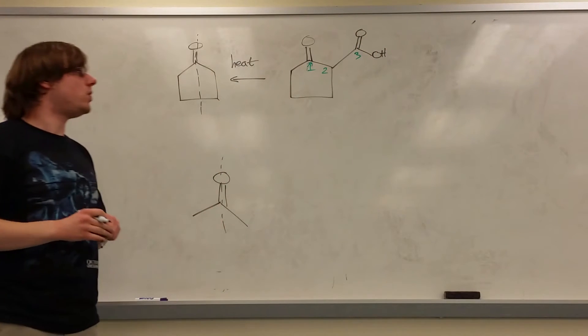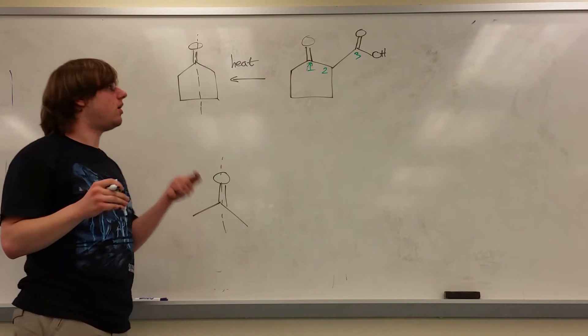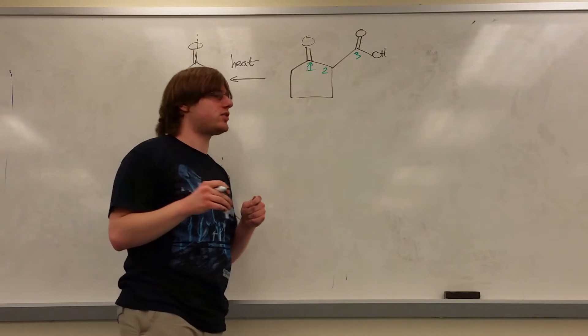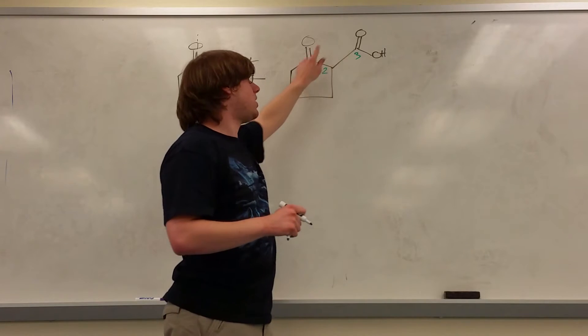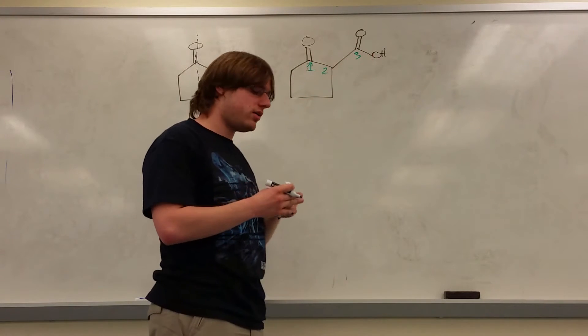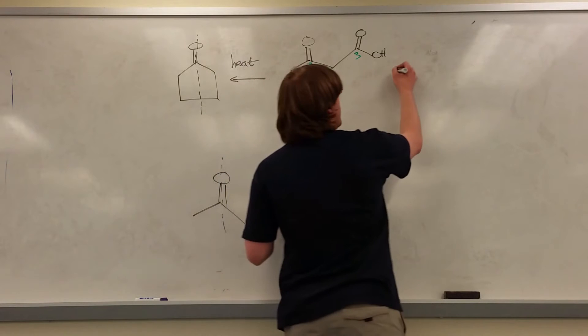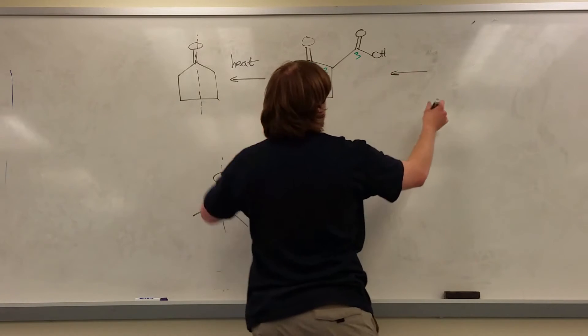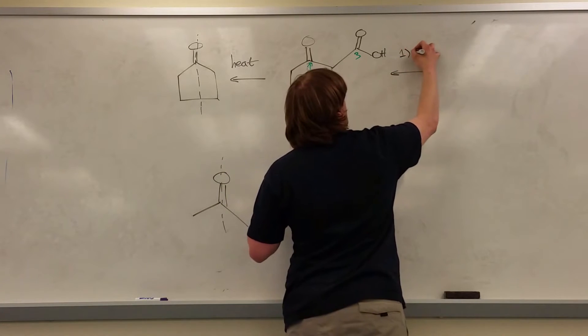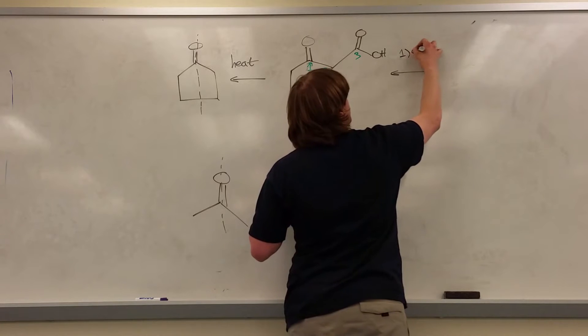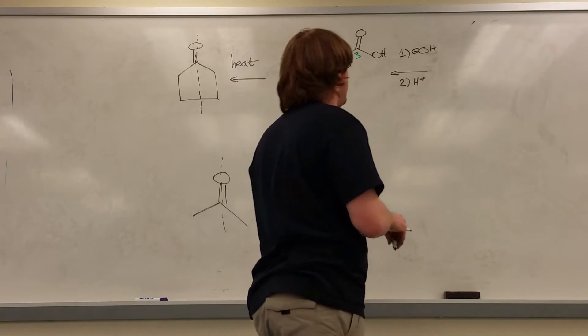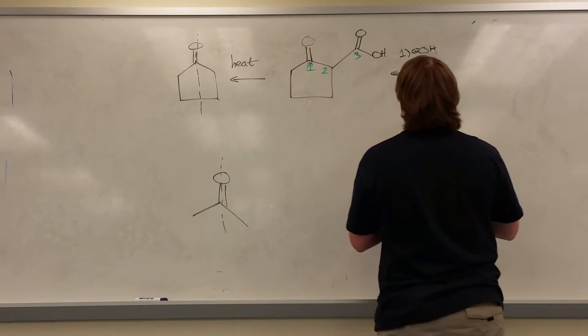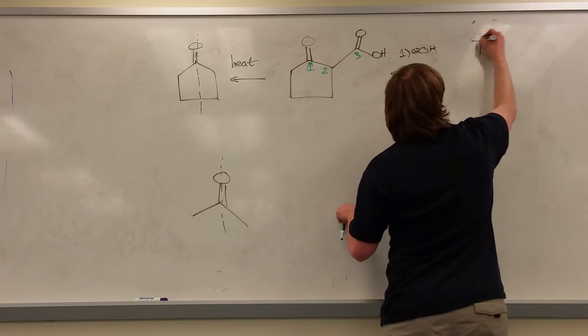Because now, we have the product of almost a Claisen reaction, right? Because this is an ester, and we know Claisen reactions end with a ketone and an ester. But we saw before the other two steps of this reaction. Step one, OH minus. Step two, H plus. And going backwards, that will convert the carboxylic acid back into its ester form.